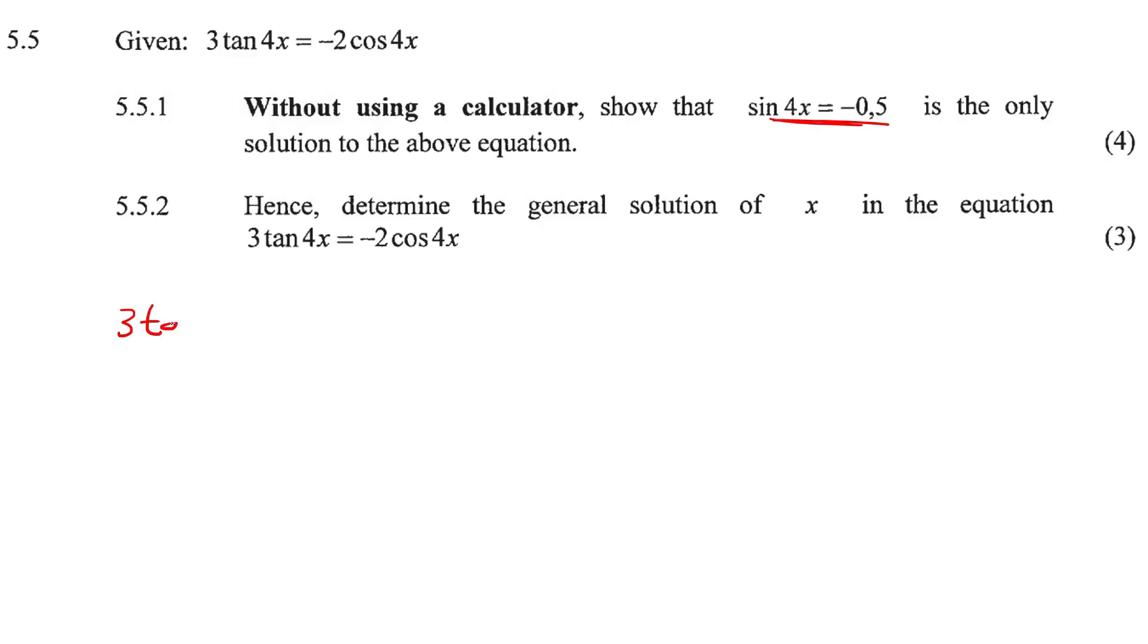So if we have 3 tan 4x equals negative 2 cos 4x, well, we know that tan is sin over cos. So because we have a tan 4x, we're going to go sin 4x over cos 4x. Those angles must always match.